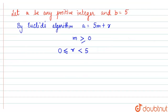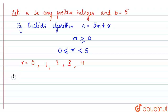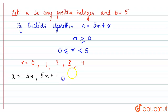Now we have r values: r can be 0, 1, 2, 3, or 4. So a can be 5m, 5m plus 1, 5m plus 2, 5m plus 3, and so on.